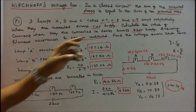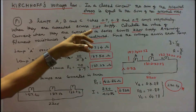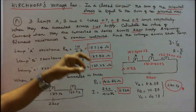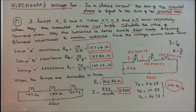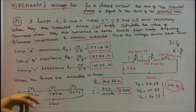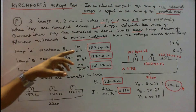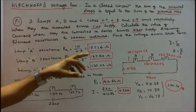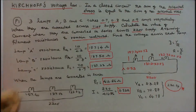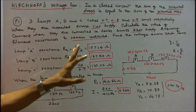We know that I is equal to V by R, so R is equal to V by I. V is given as 110V and I equals 0.7, 0.8, and 0.9 respectively. We can easily find the lamp resistances. Lamp A resistance is equal to 157.14 ohms. Lamp B resistance is equal to 137.50 ohms. Lamp C resistance is equal to 122.22 ohms.